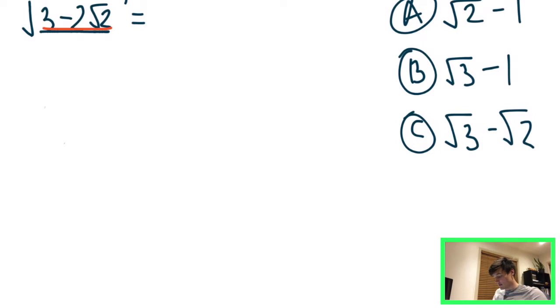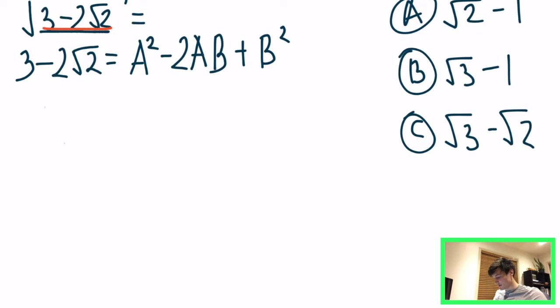So we're going to say 3 minus 2 root 2 is equal to the expanded form of the perfect square. So we're going to say, so that would be A squared minus 2AB plus B squared. So that comes from, if we factor it down, that comes from this up here, A minus B all squared.